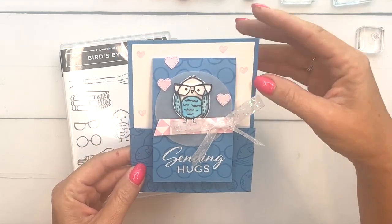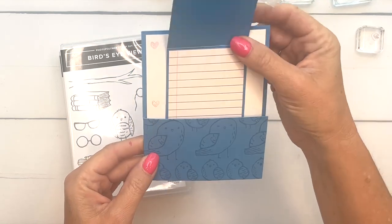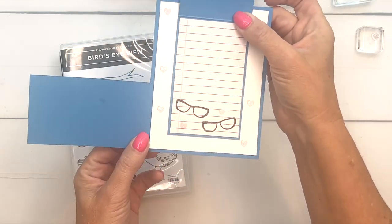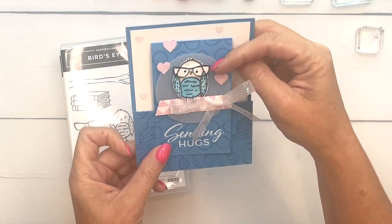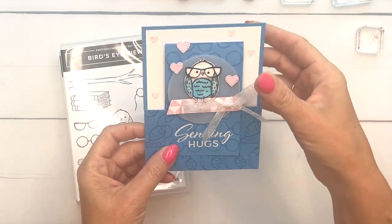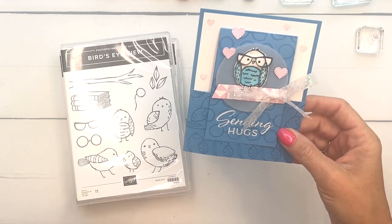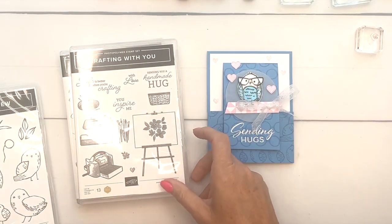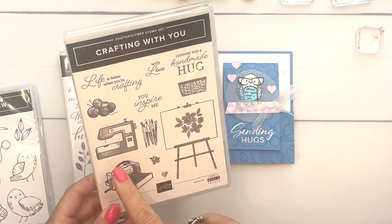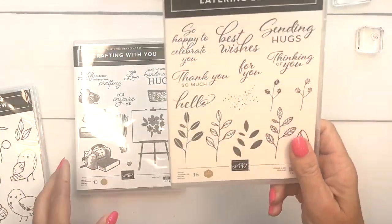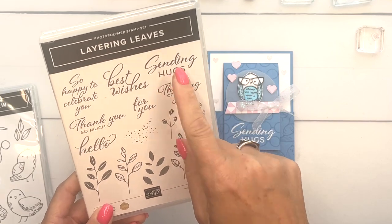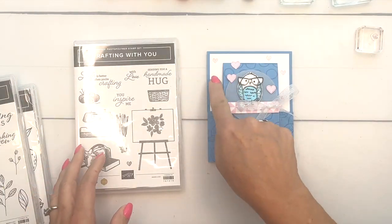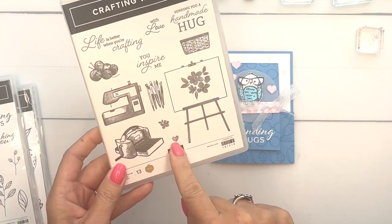This part opens like that and this part opens like that. It's a pretty easy fun fold to make. There are no sentiments in this set, so I'm using Sending Hugs from Layering Leaves, and this little tiny pink heart is from Crafting With You.